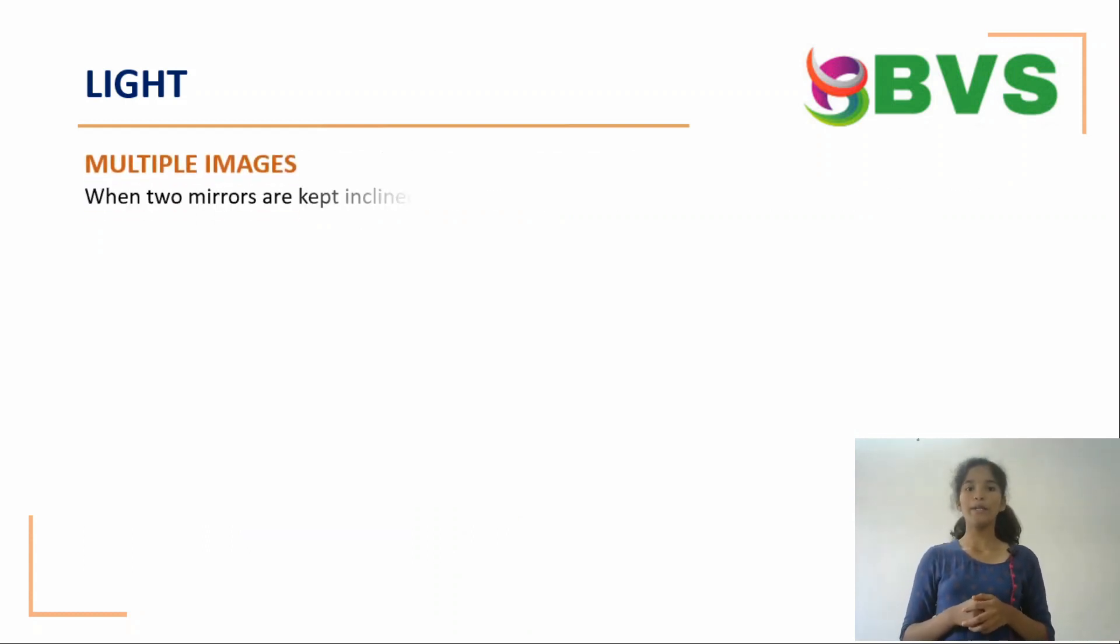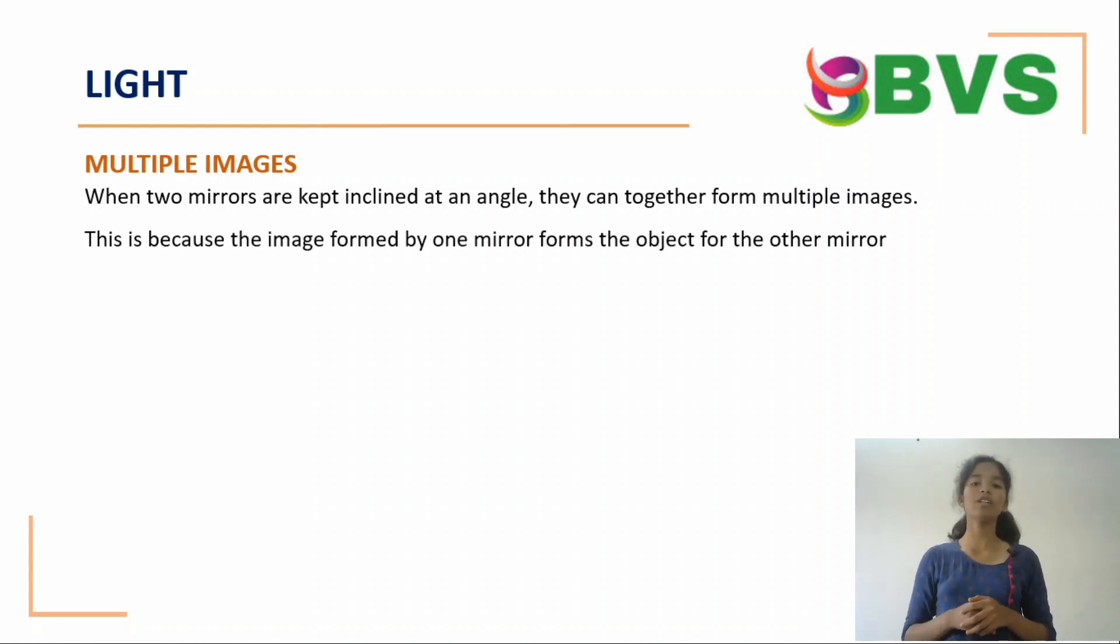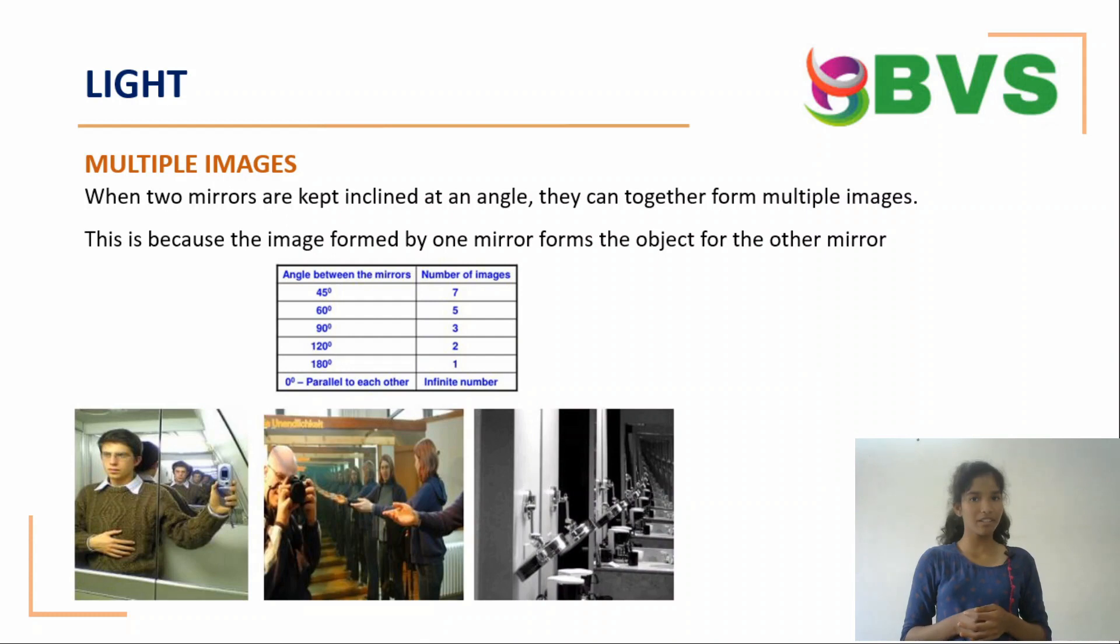Multiple images. When two mirrors are kept inclined at an angle, they can together form multiple images. This is because the image formed by one mirror forms the object for the other mirror. If the angle between the mirrors is 45 degrees, then the number of images will be 7.